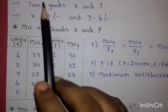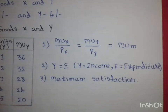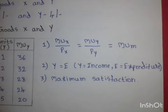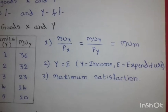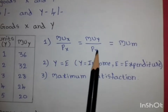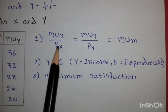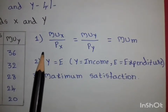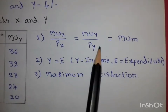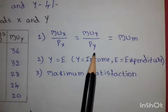To achieve maximum satisfaction, the consumer must satisfy three conditions. First condition: MUx/Px = MUy/Py — that is, the marginal utility of good X divided by the price of good X must equal the marginal utility of good Y divided by the price of good Y.